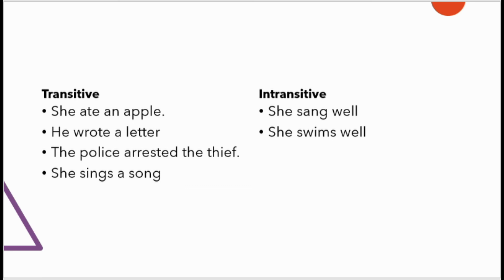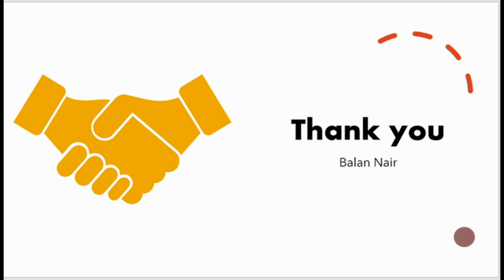To summarize: a verb with a direct object is a transitive verb — 'she writes a letter,' 'he telephoned her friend.' Without a direct object, verbs like 'she is sleeping' and 'he is swimming' are intransitive verbs.